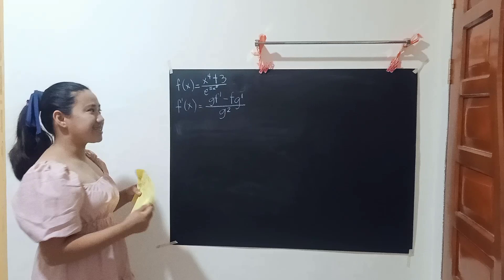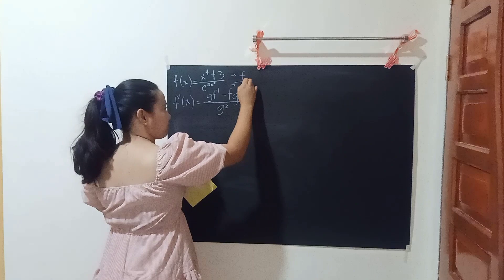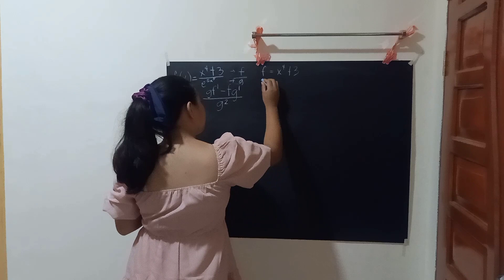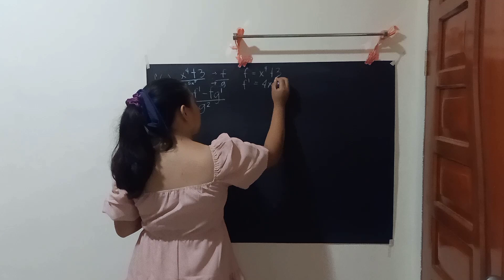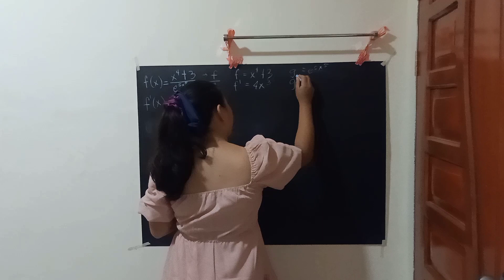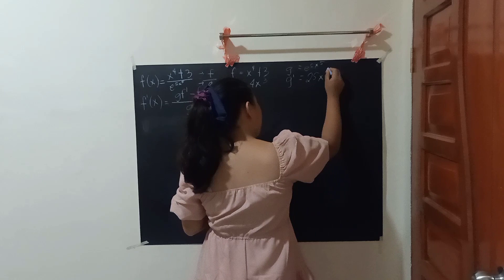Let's say this is f and this is g. So f is equal to x to the fourth power plus 3. That means f prime is equal to 4x cubed. g is e^(5x⁵). That means g prime is equal to 25x to the fourth power times e^(5x⁵).